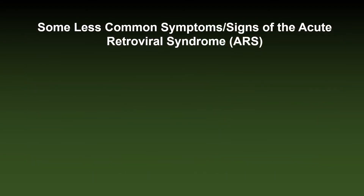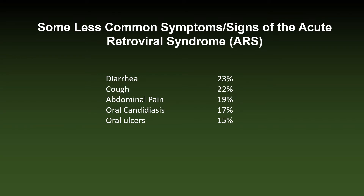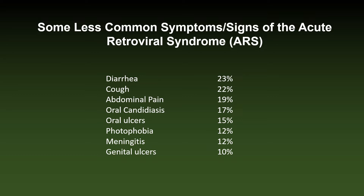The acute retroviral syndrome, ARS, may involve virtually any organ system. Frequently seen, although less common than fever and rash, are involvement of the digestive system with diarrhea and abdominal pain, of the oral cavity with candidiasis, erosions, and ulcers, cough with sometimes pulmonary infiltrates, photophobia and meningitis, and genital ulcers. Many of these are illustrated in the case studies that follow.